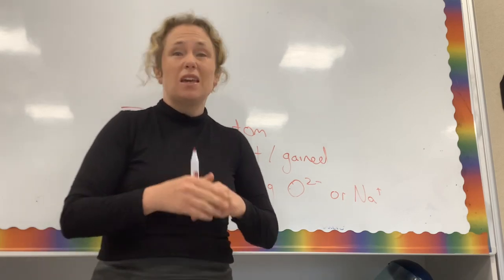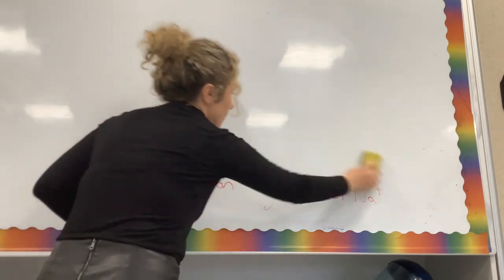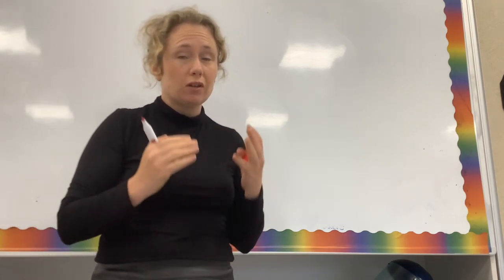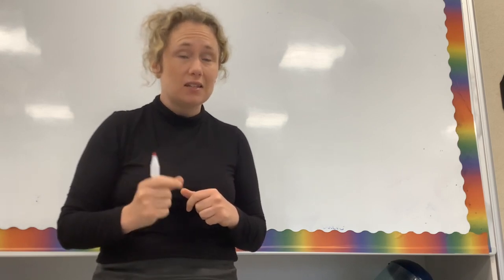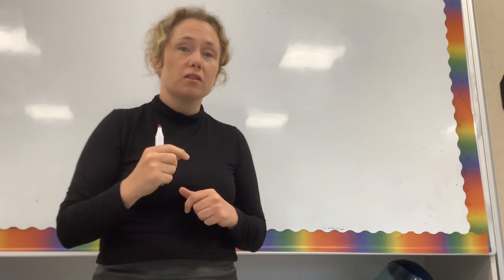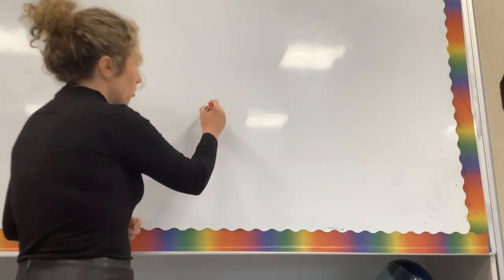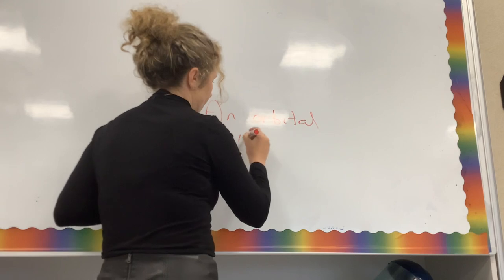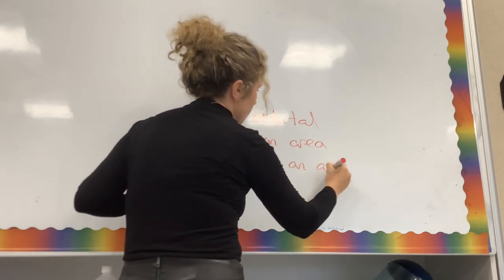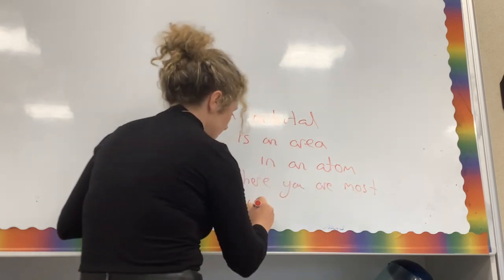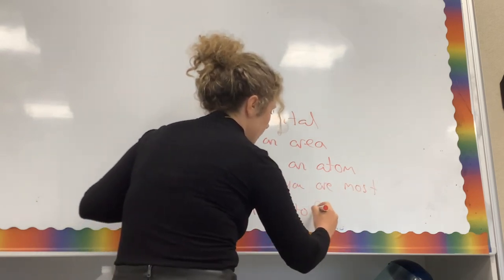The other topic with electron arrangement is the shape of orbitals and the definition of an orbital. Because electrons move in a wave-like motion and extremely fast, we have Heisenberg's uncertainty principle, which states that you cannot state exactly where an electron is because of its wave-like motion and speed. Therefore, we use the concept of an orbital — the area in an atom where you are most likely to find an electron.